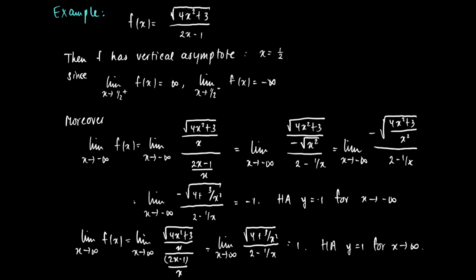Since we can have only two horizontal asymptotes, we are done now.